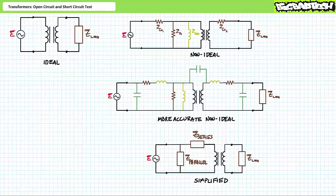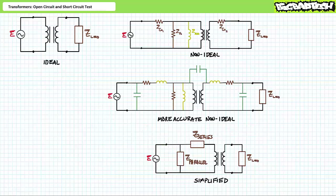Two field expedient means of testing a given transformer and accounting for those non-ideal effects exist: the open circuit test and the short circuit test. The open circuit or no load test is designed to quantify the parallel impedance component of the transformer equivalent circuit, whereas the short circuit test is designed to quantify the series impedance component. Field expedient means an action that can be quickly performed in the field without the need of special apparatus.